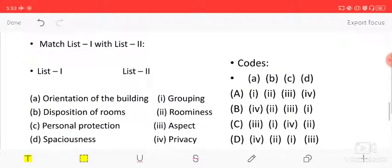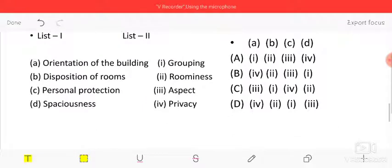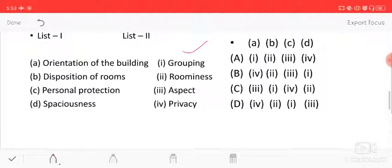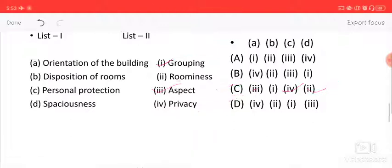Match the following: list one includes orientation of building, disposition of rooms, personal protection, and spaciousness. Let's see - orientation of building is aspect, disposition of rooms is grouping, personal protection is privacy, and spaciousness is roominess. So C is the correct option.